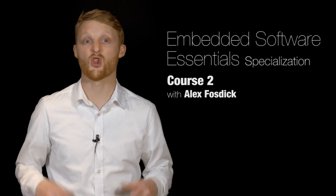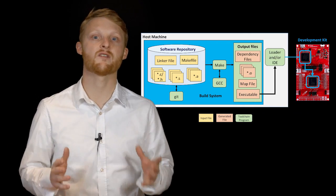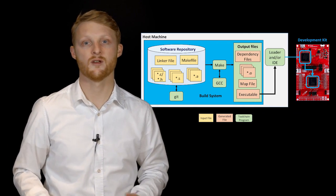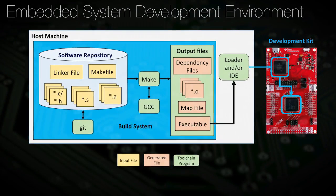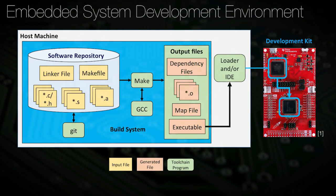In the previous course, we spent a lot of time understanding what the embedded system's development environment is. This included the host environment, the tools, and the platform. The host machine was where we wrote software, compiled object code, and connected to a target embedded system. In order to use this environment effectively, we had a variety of tools such as version control, the compiler toolchain, and the IDE. The embedded platform included a specific CPU architecture and surrounding components like memories and peripherals.